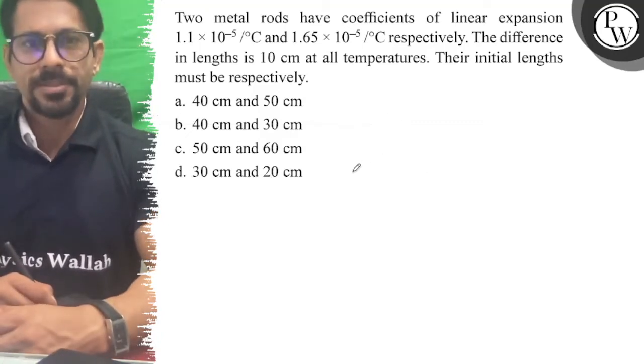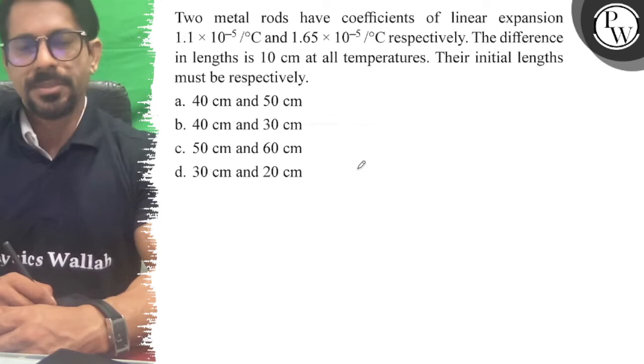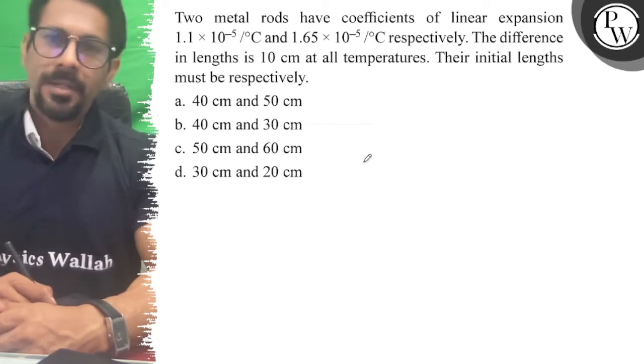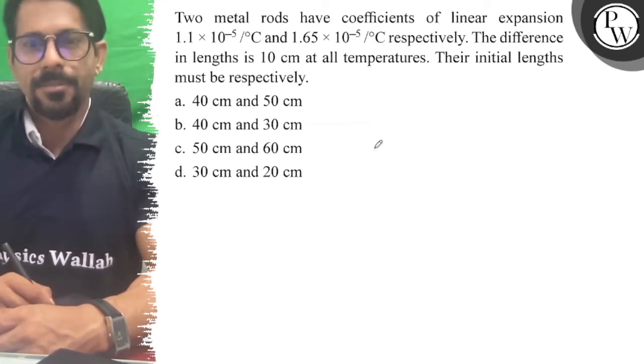Two metal rods have coefficients of linear expansion 1.1 and 1.65 times 10 to the power minus 5 respectively. The difference in length is 10 cm at all temperatures. Their initial lengths must be respectively...